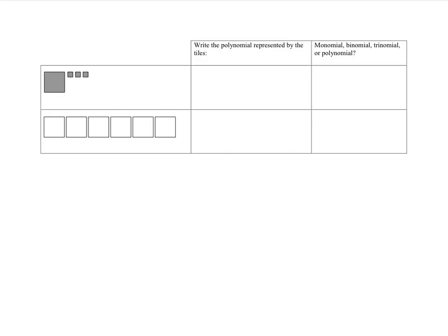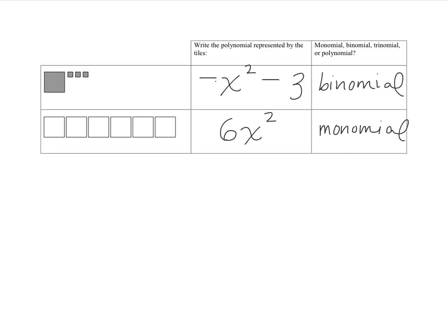There are 2 examples for you to try. Take a moment, pause the video, and write down the expression you see in the box, then tell if it's a monomial, a binomial, a trinomial, or a polynomial. Come back when you're done. Here are the answers — pause the video and check yourself.